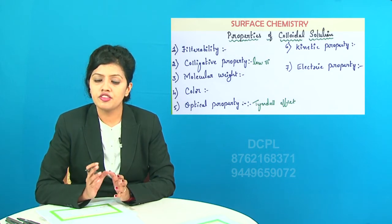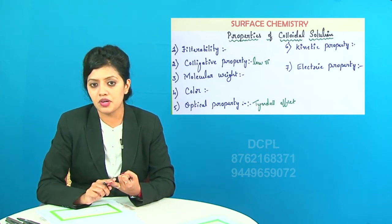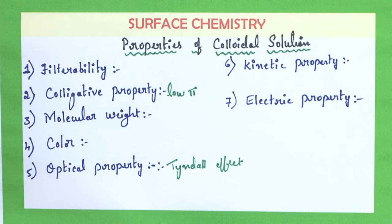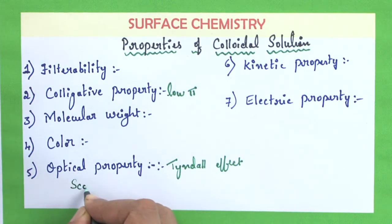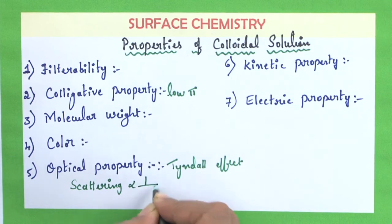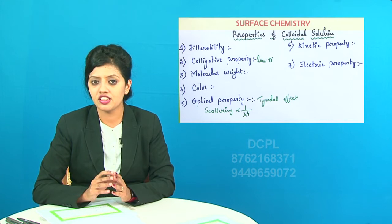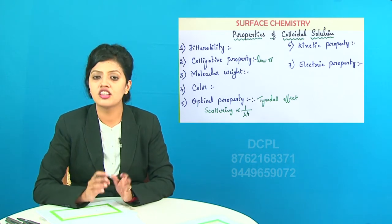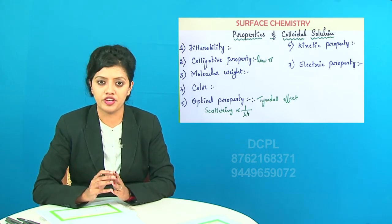The factors which affect the Tyndall effect are the wavelength of the light used and the size of the dispersed phase particles. The scattering of light is inversely proportional to the fourth power of the wavelength — hence, smaller the wavelength, greater is the scattering. This is why the blue color of the sky is due to the Tyndall effect, because blue color has the shorter wavelength.